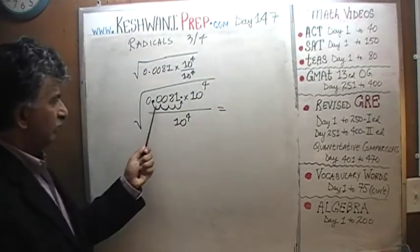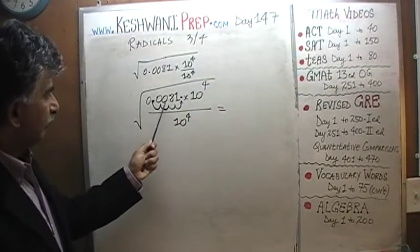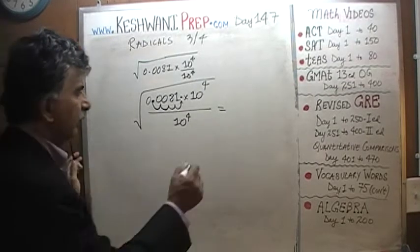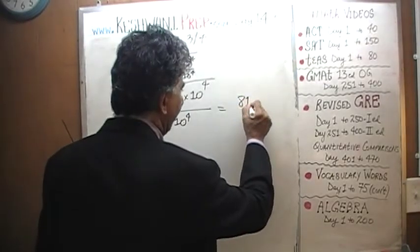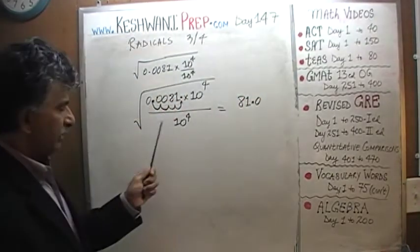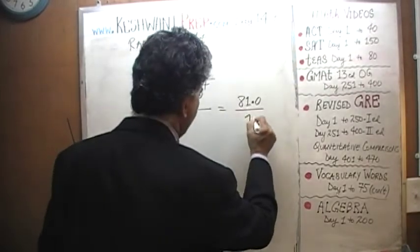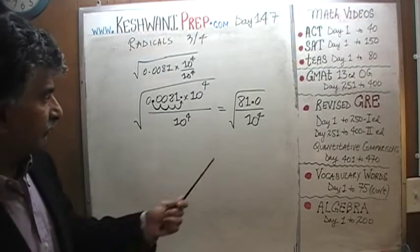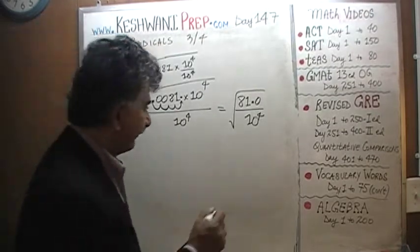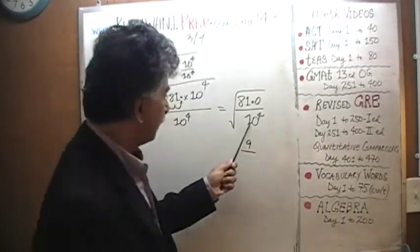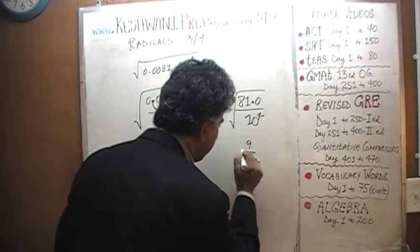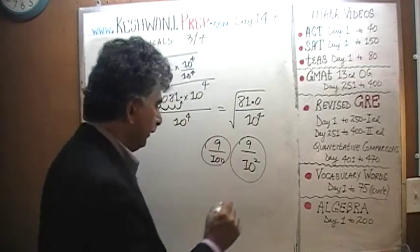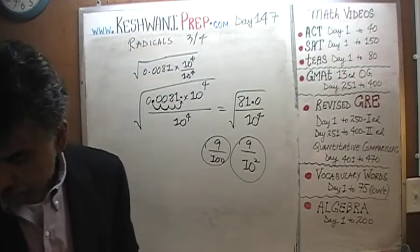As we just discussed, multiplying 0.0081 by 10^4 moves the decimal four places. On the top, we end up with 81, and on the bottom we have 10^4. That's it — we're home free. The square root of 81 is 9, and the square root of 10^4 is 10^2. There you go — the final answer is 9 over 100.